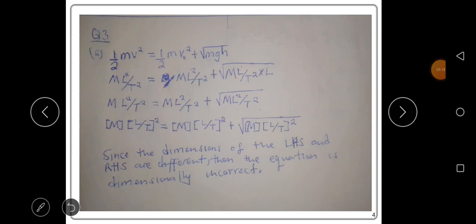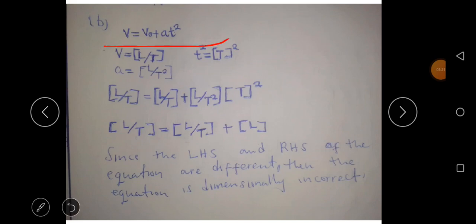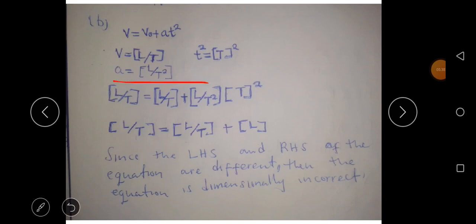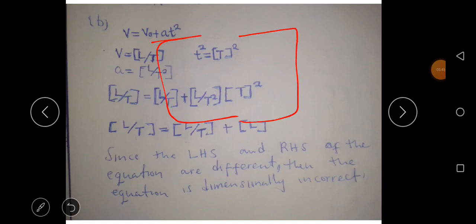Let's look at equation B: v equals v₀ plus at squared. We want to find if this equation is dimensionally correct. The dimension for velocity is L over T and the dimension for acceleration is L over T squared. Dimensions should always be written in brackets.